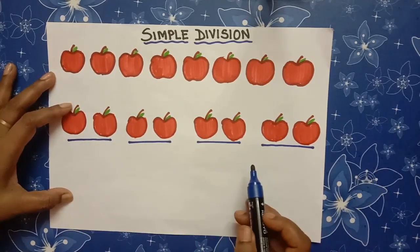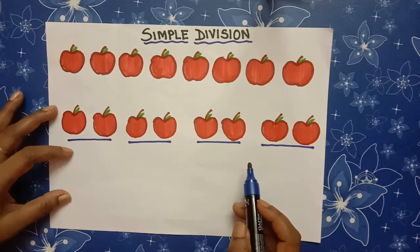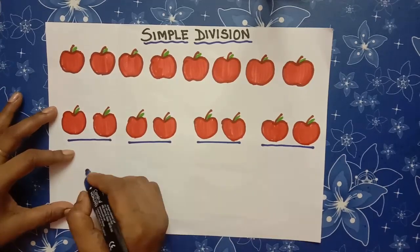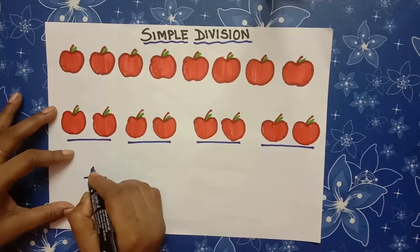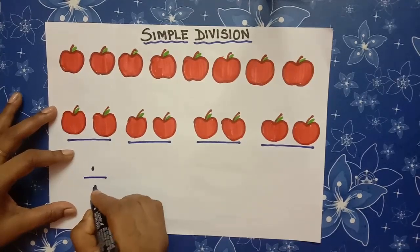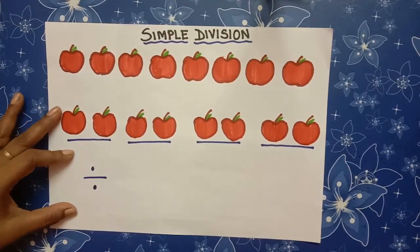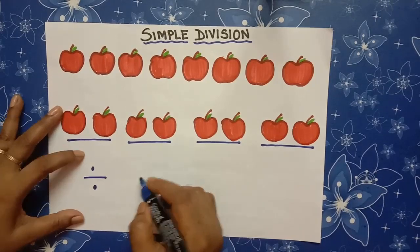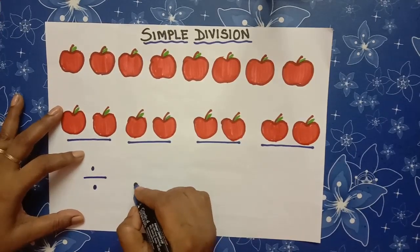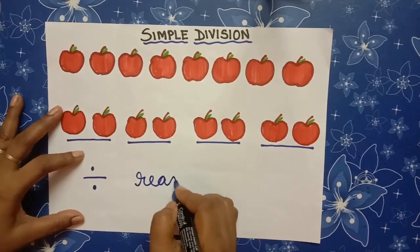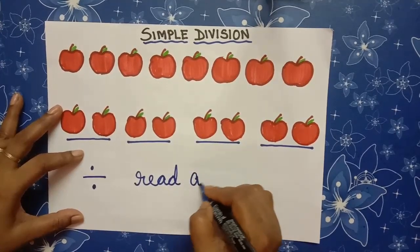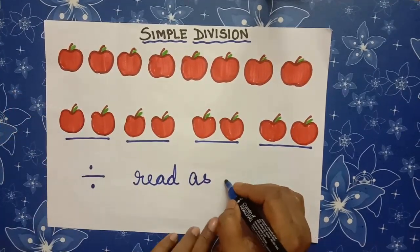So, equal sharing is division. The symbol for division is ÷ and is read as divided by.